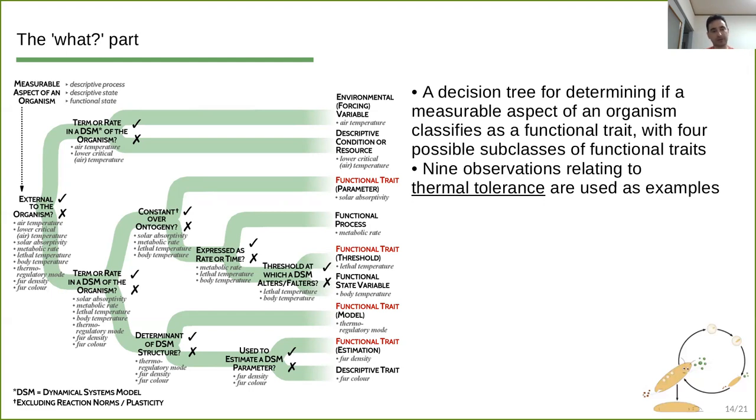And then we just ask ourselves a series of questions about each of these observations. So is it external to the organism or not? So air temperature and lower critical air temperature, it's air temperature, so they are obviously external. And as such, we can ask ourselves, do they figure, are they terms in the dynamical systems model of our organism? If yes, this must be an environmental forcing variable. If not, we are simply having a descriptive condition or descriptive resource. For those traits that are not external to the organism, then we can ask a series of further questions to classify them appropriately. So for example, we ask them, are they terms or rates that appear in a dynamical system model of an organism? If not, then we ask ourselves, are they determinants of DSM structure?